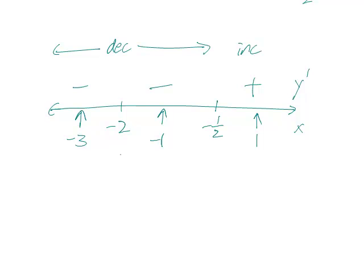If we look at minus 2, the function is decreasing before and after it. So it's not a max or a min. But at minus 1 half, the function is decreasing and then increasing, so that means this is a relative min.